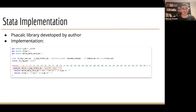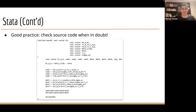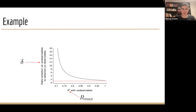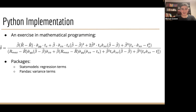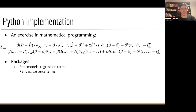Looking at the Stata implementation, the author produced a library called PSACALC. You specify your range of R values and it pretty much comes down to one line of code. When we tried implementing in Python, we came across some difficulties and realized it's good to check the source code when in doubt. Some variables in the source code are actually different from the delta formula — it's a more updated version from a paper we didn't initially have access to. Implementing this then just becomes an exercise in mathematical programming, using statsmodels and pandas to get your regression terms and variance terms.